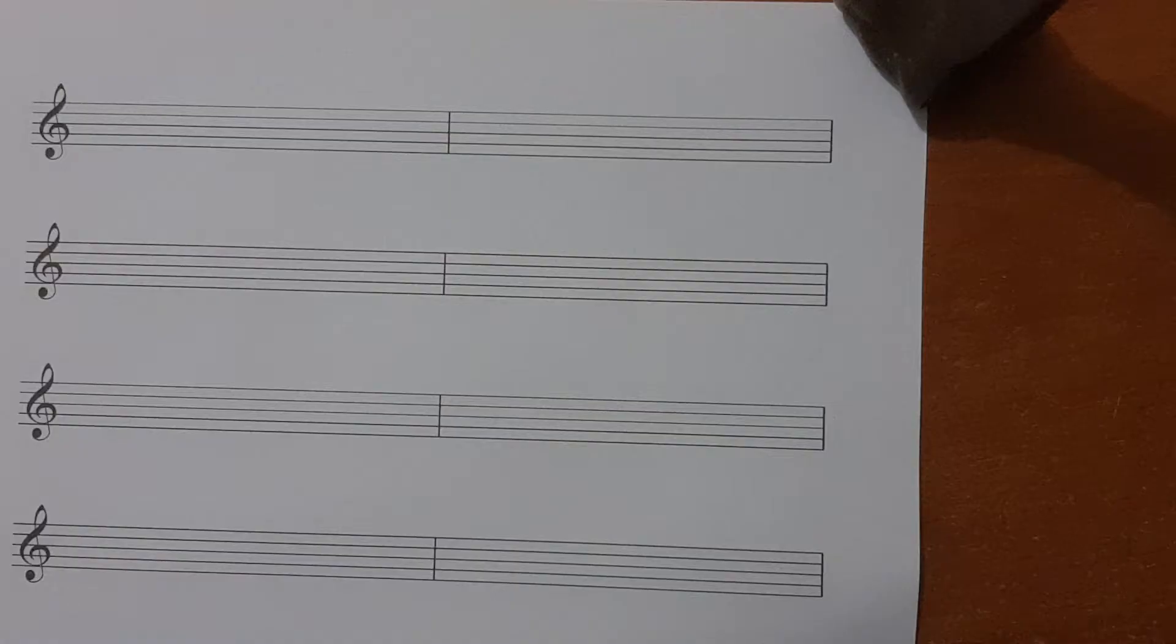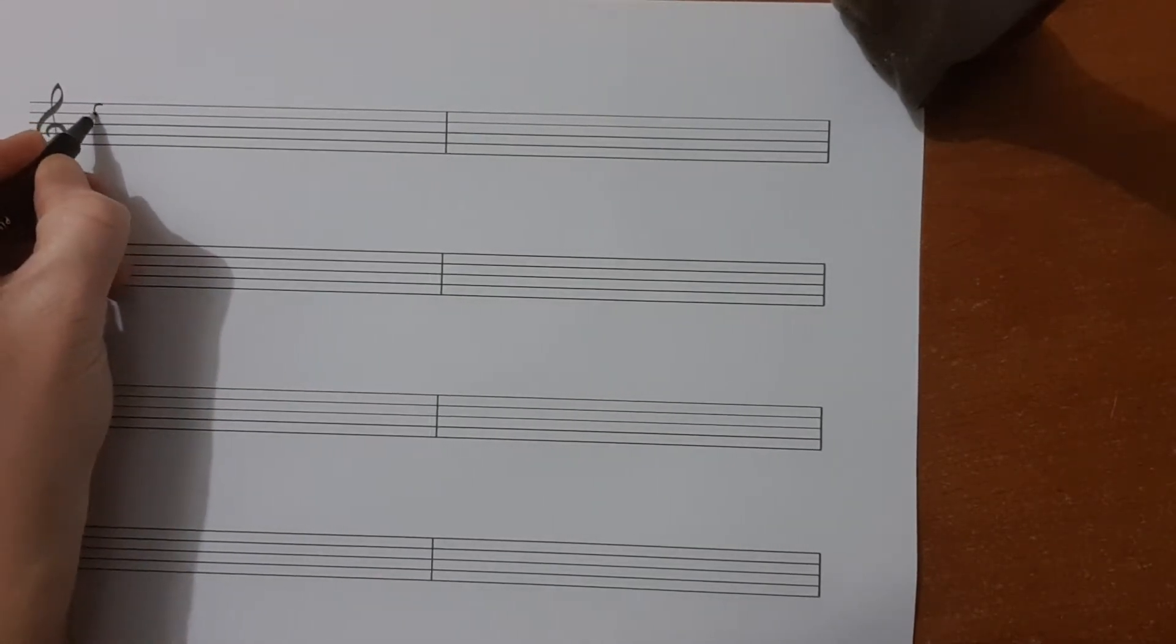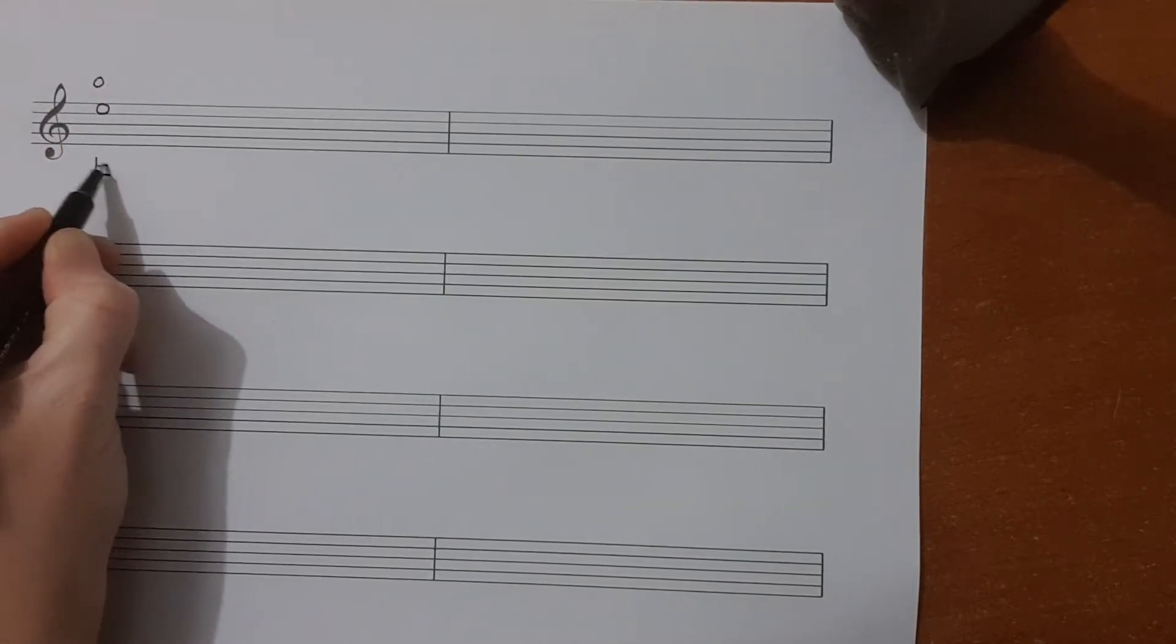Now we're going to write it. Grab a pencil and your manuscript paper and off we go. We start with our open E string which is written in the top space. No fingers and it's the note E.